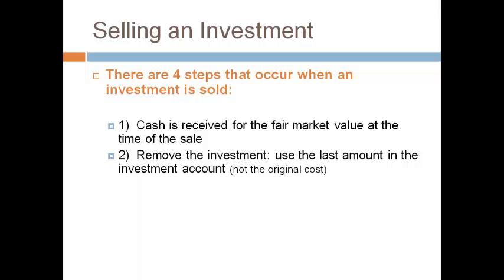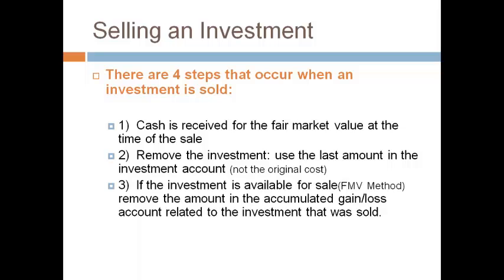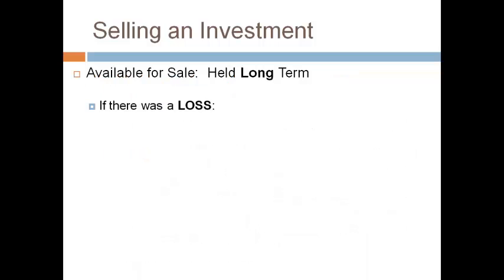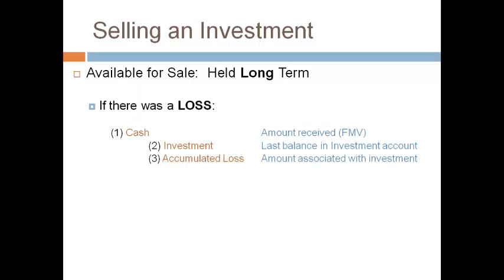Remove the current adjusted balance in the investment account. Third, remove the balance in the accumulated gain/loss account if the investment is accounted for as available for sale. Fourth, the journal entry will be out of balance and a realized gain or loss is recorded for the difference — a debit is a realized loss and a credit is a realized gain. To record a loss: record cash for the amount received, remove the investment account for the current balance, remove the current balance in the accumulated loss account — assuming the balance is a debit, it takes a credit to remove it — then record the amount required to balance as a realized loss.